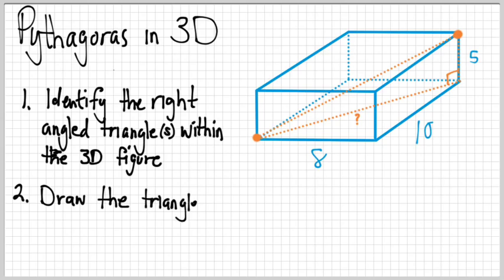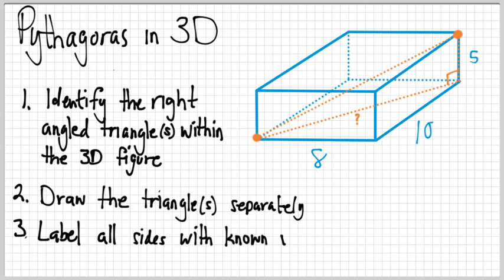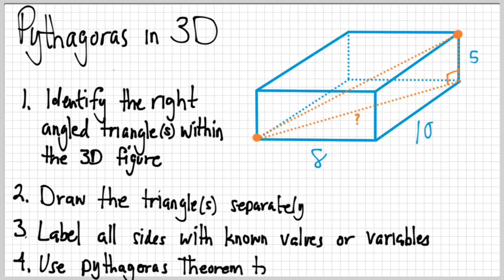But then you actually need to draw those triangles separately. You want to redraw them outside the box, a lot like we did in the word problems with Pythagoras, so that you can label them really accurately and not get them muddled up with all the other lines. We're going to label all the sides with the known values, or with variables or pronumerals for the ones we don't know. And then finally, we'll use Pythagoras' theorem to solve and find all the unknown variables. So those are our four steps.